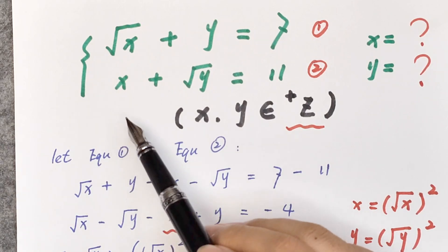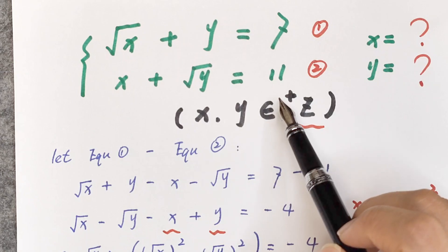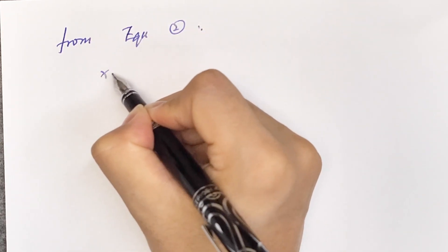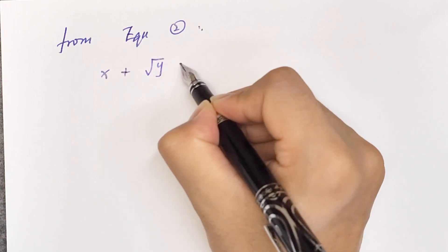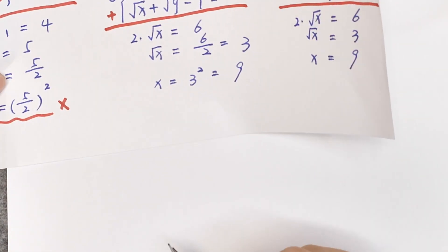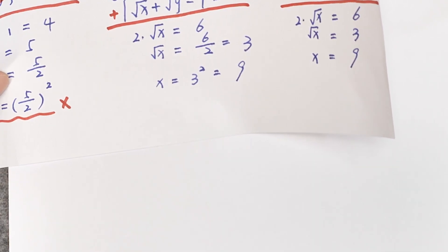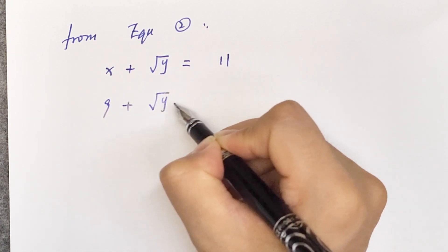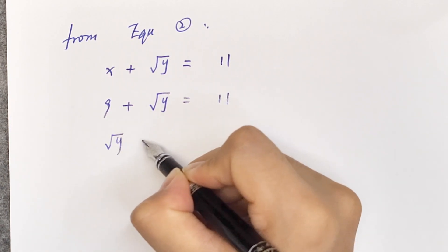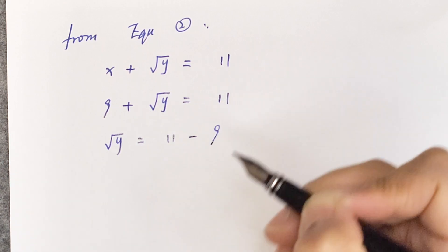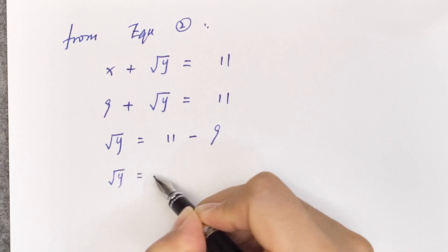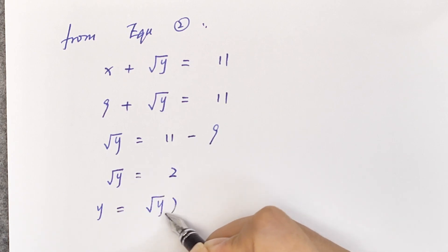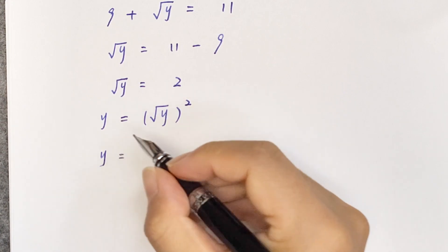Now from equation 2, x plus square root of y equals 11. Since x equals 9, we have 9 plus square root of y equals 11, so square root of y equals 2, and therefore y equals 4.